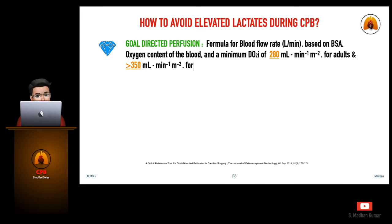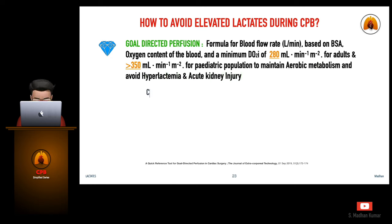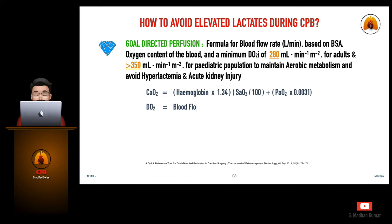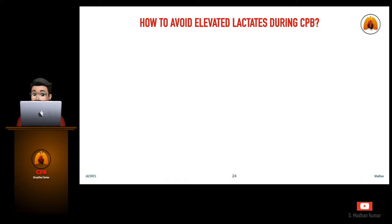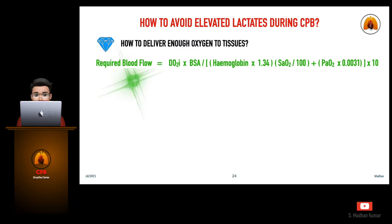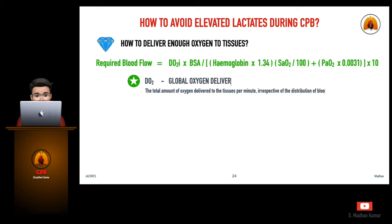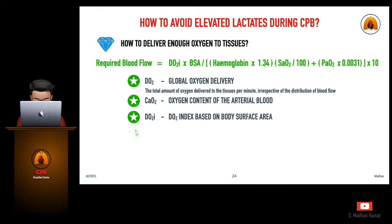The formula for blood flow rate required for goal directed perfusion is based on body surface area, oxygen content of the blood, and a minimum DO2 of 280 ml for adults and more than 350 ml for the pediatric population. This can maintain aerobic metabolism to avoid hyperlactatemia and acute kidney injury. The inputs needed are required DO2, body surface area, hemoglobin, oxygen saturation, and partial pressure of oxygen.